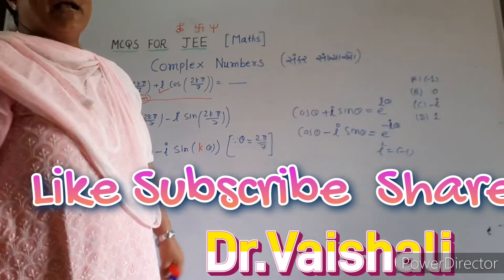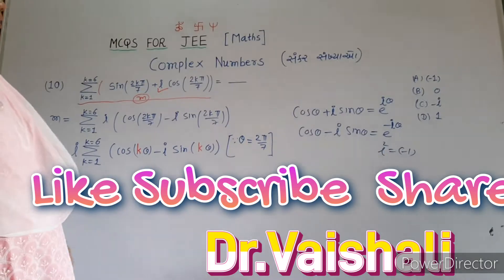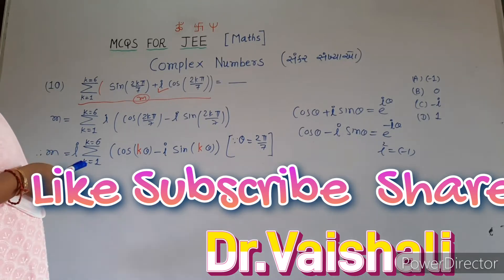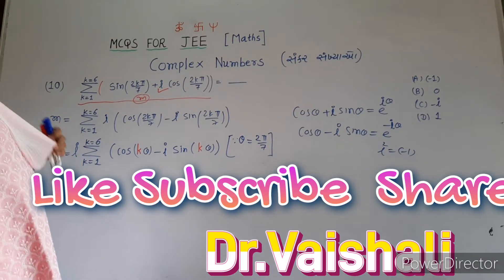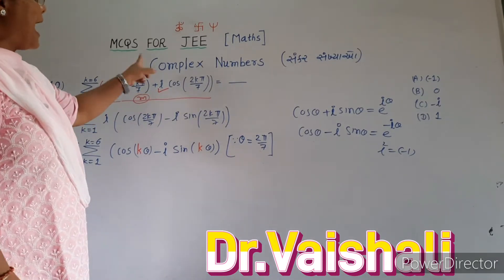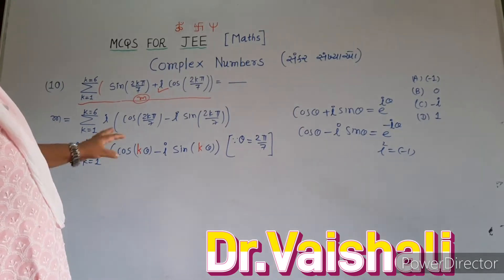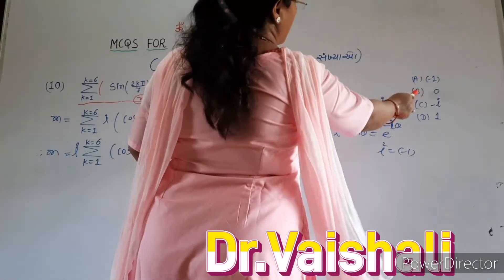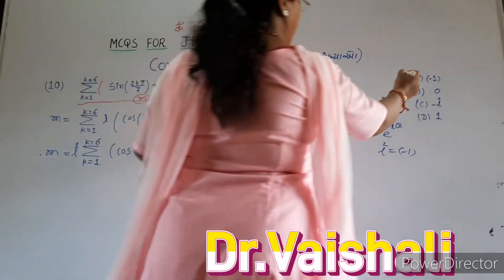Good morning friends. Today we have complex numbers — Shankar Sankhyav maa MCQs for JEE. This is MCQ number 10. Sigma K equal to 1 up to K equal to 6, sine of 2Kπ/7 plus i into cos of 2Kπ/7 is equal to what? Option A: minus 1. Option B: 0. Option C: minus i. Option D: 1.